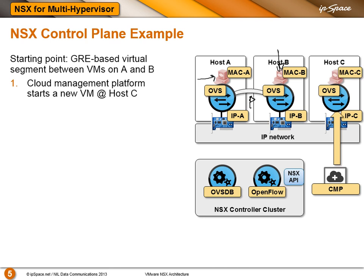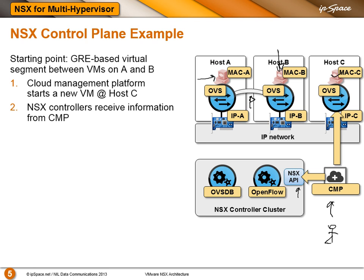Next, the user asks the cloud management platform to start a new VM and the new VM is placed on host C. The new VM obviously needs connectivity to the other two VMs, so the cloud management platform has to tell the NSX controller through the API that we need this new virtual machine on host C and it has to be added to the rest of the layer 2 subnet.